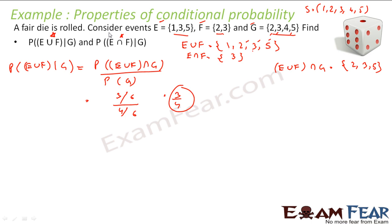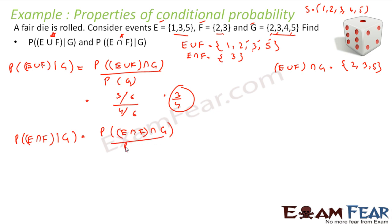Now for the second part: probability of E∩F given G equals probability of (E∩F)∩G divided by probability of G. E∩F = {3}. The intersection of {3} with G gives only one common element, which is 3. So E∩F∩G = {3}.